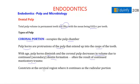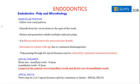The coronal pulp constricts at the cervical region and continues as radicular pulp, which follows the root canal pattern. Radicular pulp extends from the cervix down to the apex of the tooth. Molars and premolars exhibit multiple radicular pulps due to having 2 or 3 roots. The radicular pulp is fibrous and protects the neurovascular bundle. It decreases in volume with age due to continued dentinogenesis.